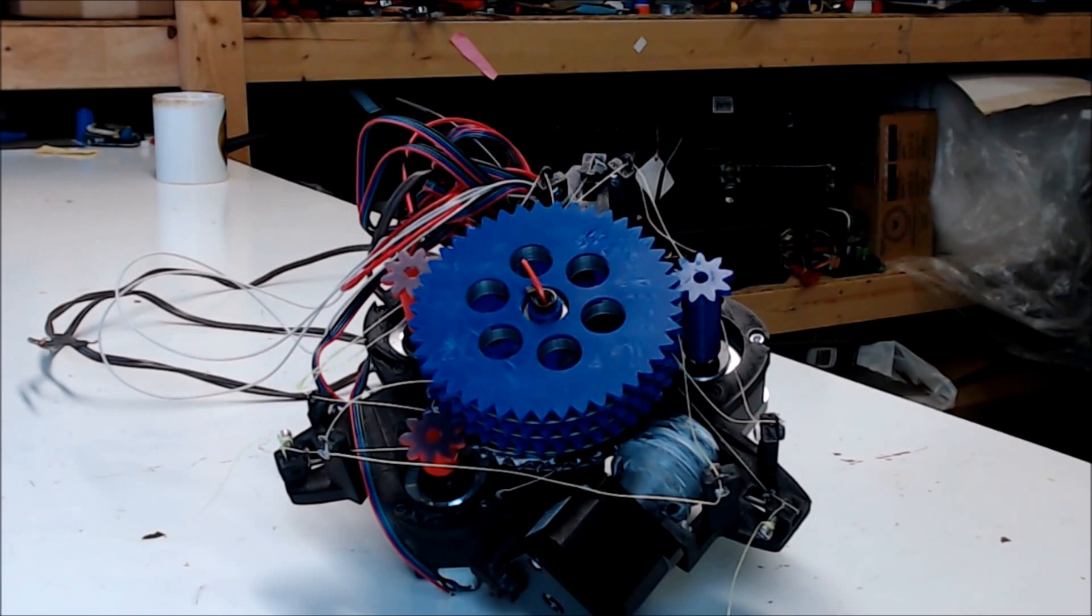This is what the hang printer looks like completely assembled. We're going to do this build in two videos in four steps. The steps being the physical build, the firmware, the calibration, and the first print. This is the first video. We'll get it built and get some firmware on it.